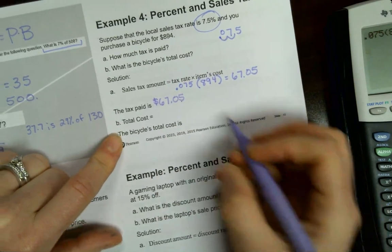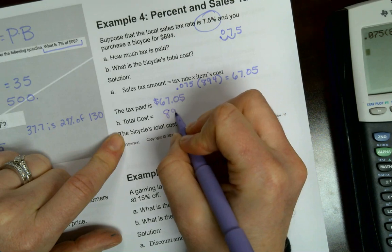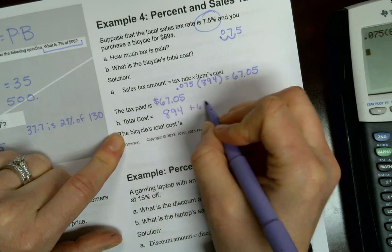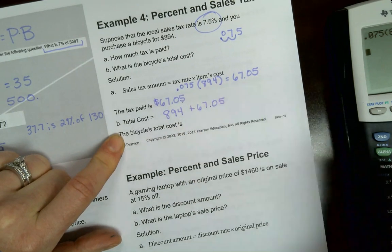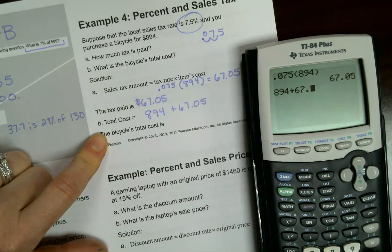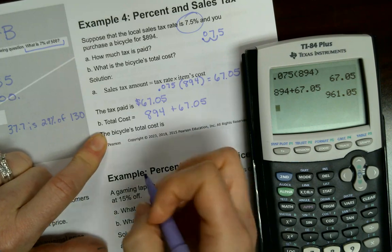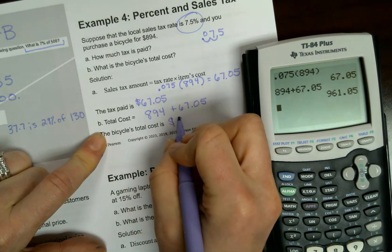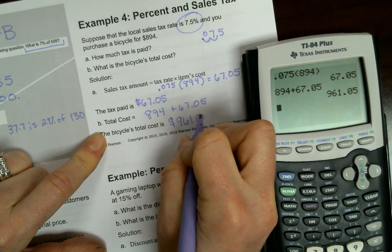So to find your total cost, you've got to add them. You're going to add how much you're buying the bike for plus your taxes and that will be your total charge. That's going to be what you need to pay for the store. The total cost is $961.05.